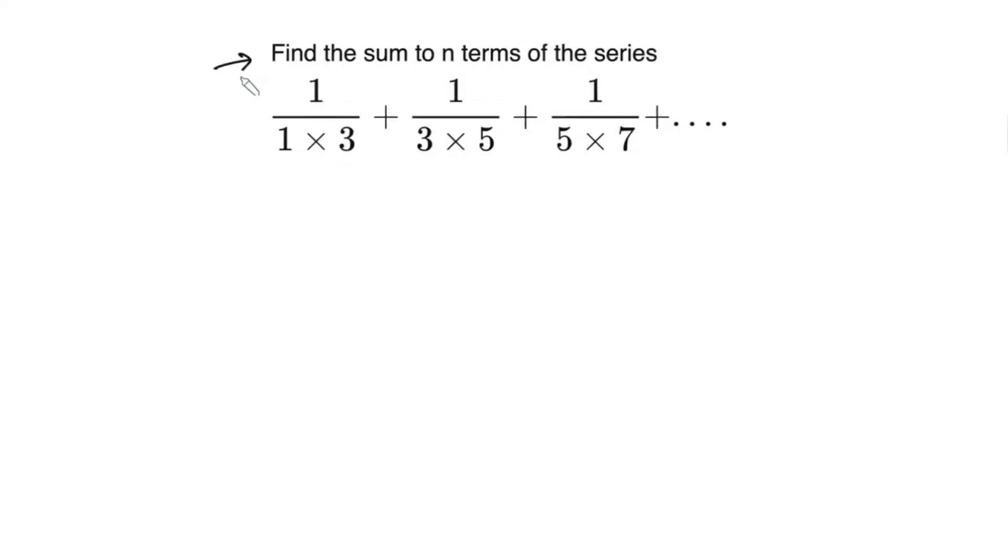Let's look at another example where we can use the cancellation method. We need to find the sum of the series 1/(1×3) + 1/(3×5) + 1/(5×7) and so on.